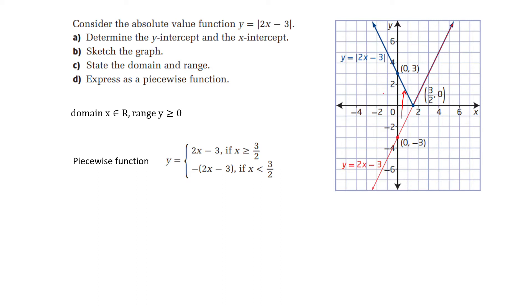If we want to express this as a piecewise function, we have two different rules. When x is greater than or equal to 3 over 2, it's going to be itself: 2x minus 3. If x is smaller than 3 over 2, it's going to be the negative of everything inside the absolute value — so it's negative of 2x minus 3.